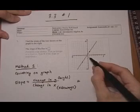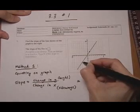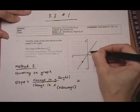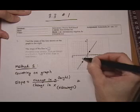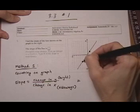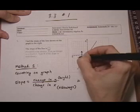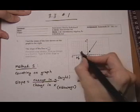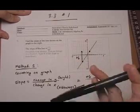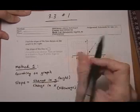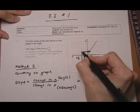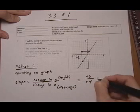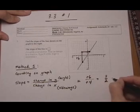On this graph, we start with our first point and figure out how the height changes going from the first point to the second point, and we count. It changes by 1, 2, 3, 4, 5, 6 — it goes up 6. Up means plus 6. Then we look at how the sideways position changes: it goes 1, 2, 3, 4 to the right, which means positive 4. So the slope is 6 over 4, which reduces to 3/2.